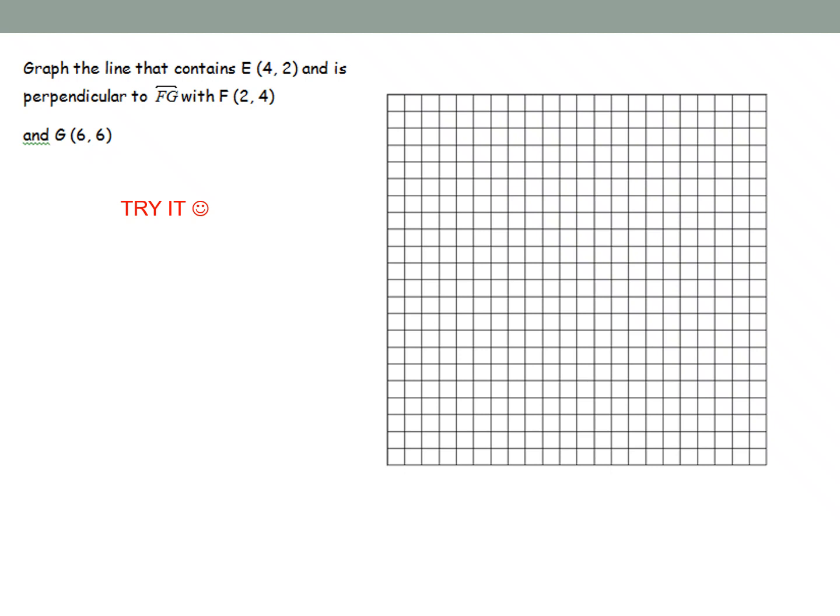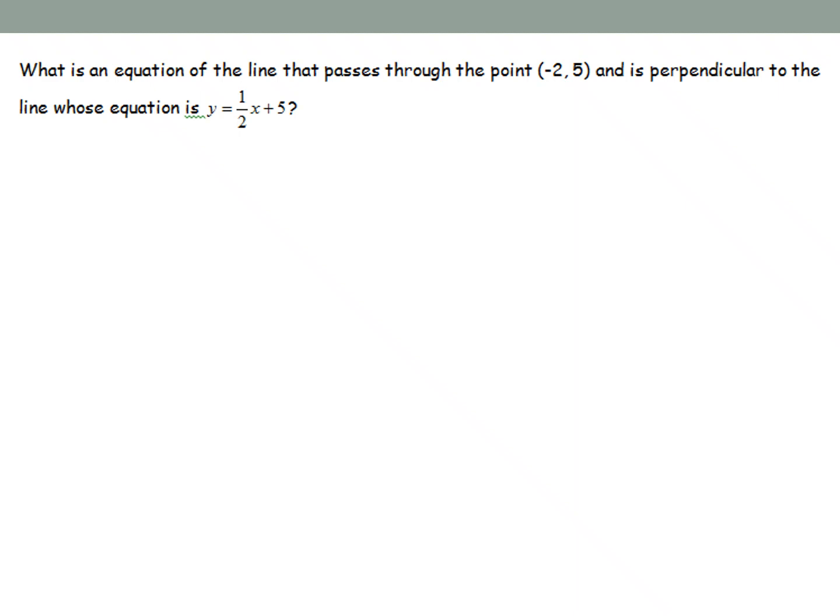So for this next one, using the one we just did as an example, please go ahead and try it. So start by plotting points F and G and connecting them. Plot point E separately. Find the slope of F, G. And if I want it perpendicular, find the negative reciprocal slope. So go ahead and try that one on your own. You can pause it and play when you're ready to go. We will go over that in class.